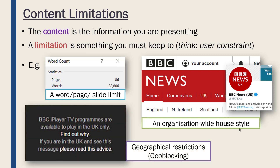The third example is related to location, which we talk about quite a lot regarding availability, but often you're limited as someone presenting information by various different geographical restrictions. Sticking to BBC, if you're accessing BBC iPlayer to watch TV programmes from the BBC and you're outside of the UK, you'll get a message saying they are only available inside of the UK. Which means you can't go to America or Australia and try to watch BBC programmes because there is a geographical restriction on those programmes — they can only be available inside the UK, and this is called geo-blocking. Because of this content limitation, you know that if you are making a programme for the BBC it can only be viewed inside the UK.